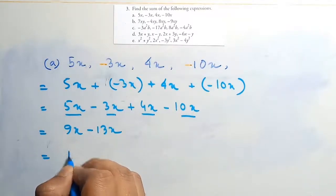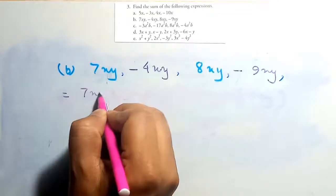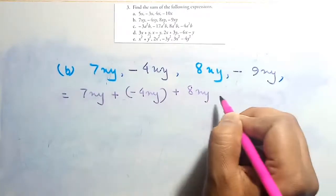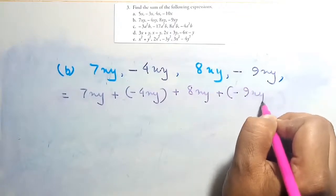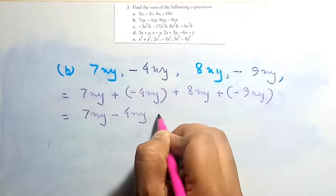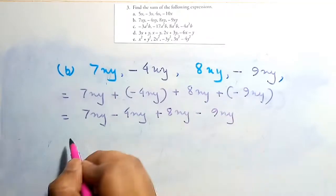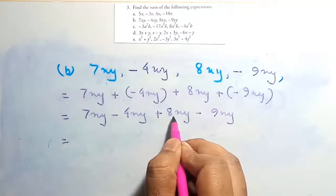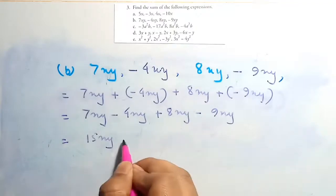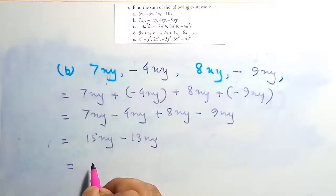According to equation B: 7xy minus 4xy plus 8xy minus 9xy. Positive terms: 7xy plus 8xy equals 15xy. Negative terms: minus 4xy minus 9xy equals minus 13xy. So 15xy minus 13xy gives 2xy.